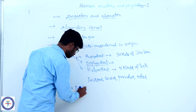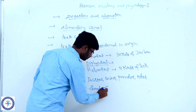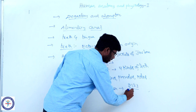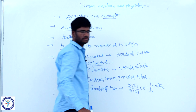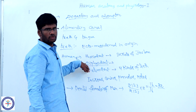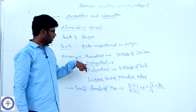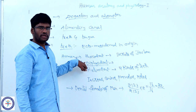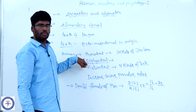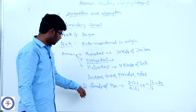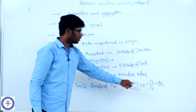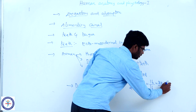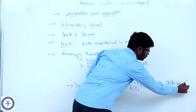The dental formula of an adult human is 2-1-2-3 / 2-1-2-3 × 2 = 16/16, giving a total of 32 teeth. Milk teeth in infants are called deciduous or temporary teeth, and they are replaced by permanent teeth — that is why it is called diphyodont dentition. All 32 permanent teeth are present in adult humans, particularly after 22 years of age.